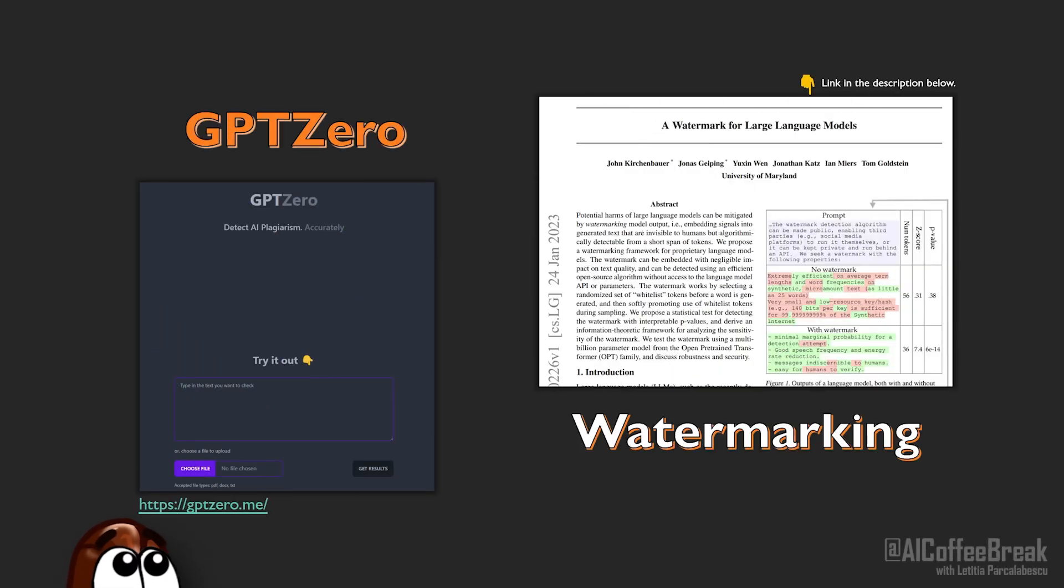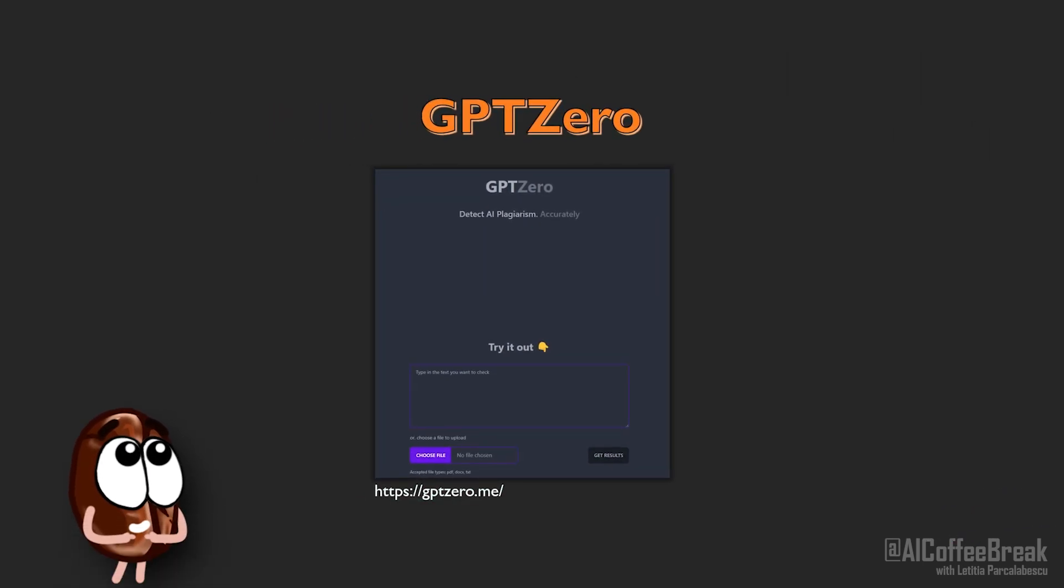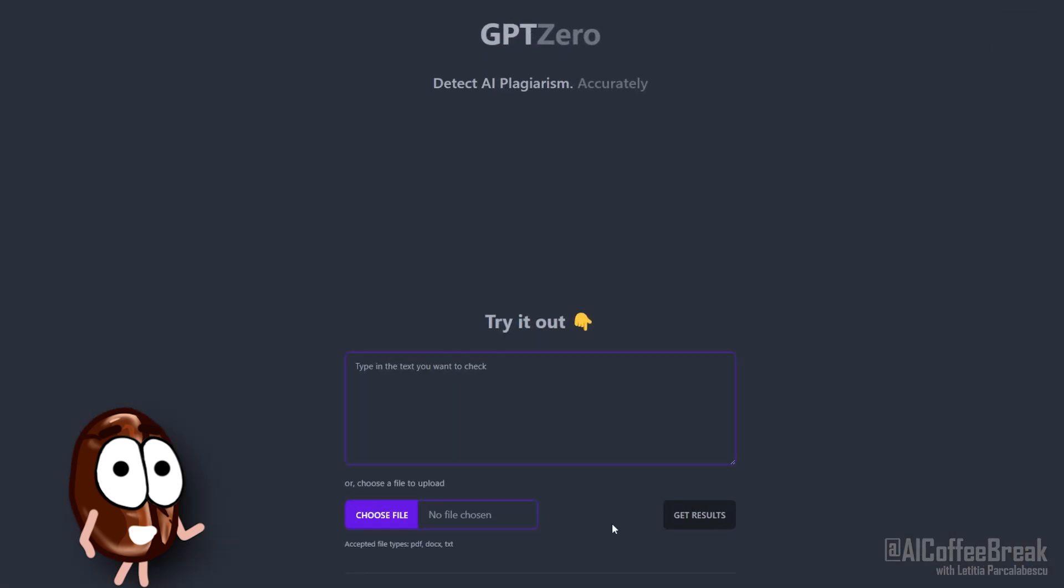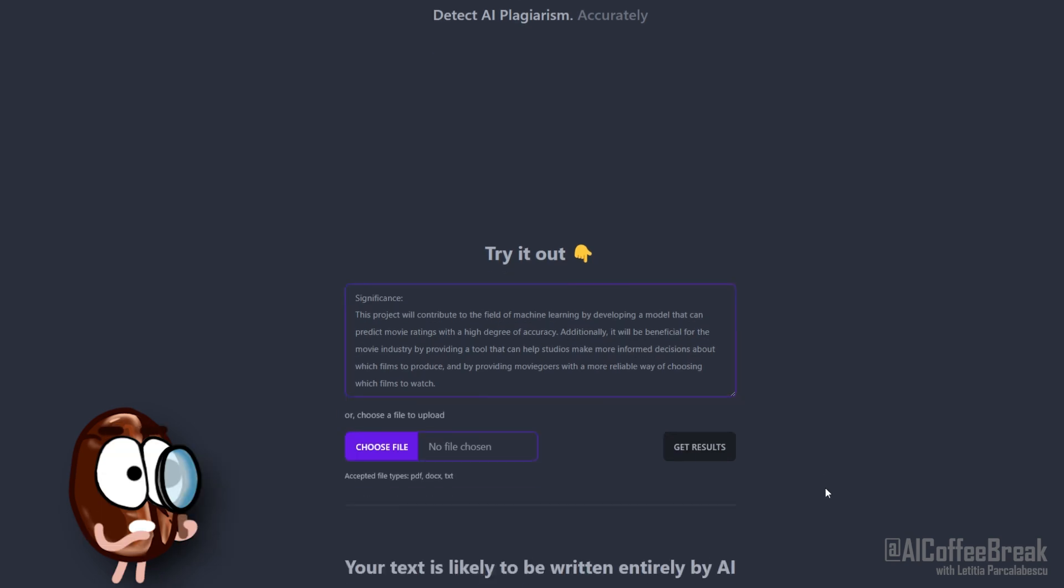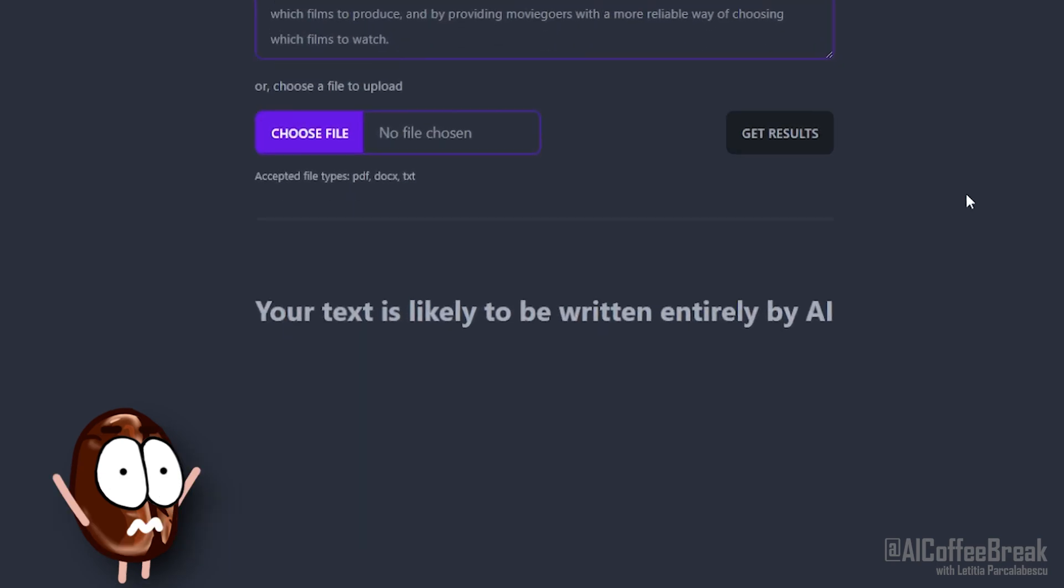Before explaining watermarking, we want to see how existing systems for detecting AI generated content work so far. As an example, we will take GPT-0. Since it is a very popular tool made specifically for teachers, if I take the last part of the text that ChatGPT generated for that project proposal, then I see that GPT-0 will tell us that the text is generated by AI.